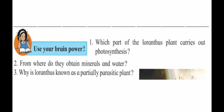Use your brain power, children. Which part of the loranthus plant carries out photosynthesis? The leaves of the loranthus plant carry out photosynthesis. From where do they obtain minerals and water? Loranthus obtains the necessary minerals and water from the host plant. Why is loranthus known as a partially parasitic plant? Because loranthus takes shelter on the host tree and sucks water and minerals from it, but it can photosynthesize and prepare its own food. Therefore, it is called partially parasitic.